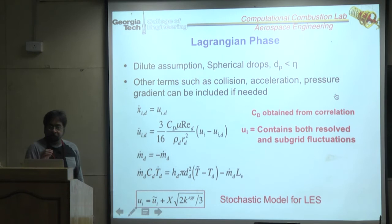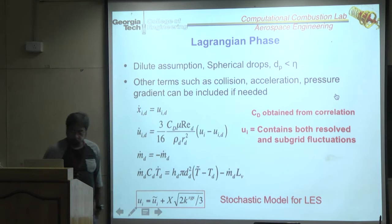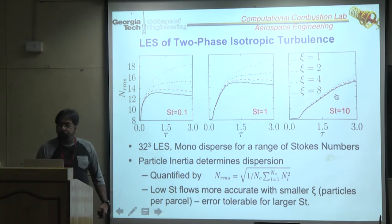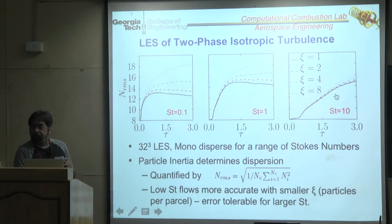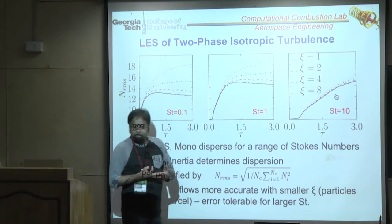On parcels vs particles in LES: a parcel means one tracked entity represents N particles with identical properties — e.g., one parcel represents eight particles. This reduces the number of tracked entities. Tracking one particle per parcel is the ideal baseline reference; computationally people vary this but it has accuracy implications.